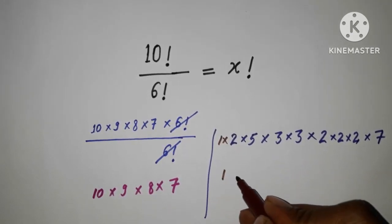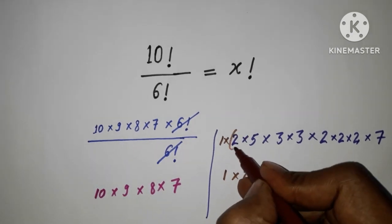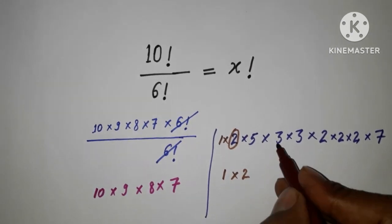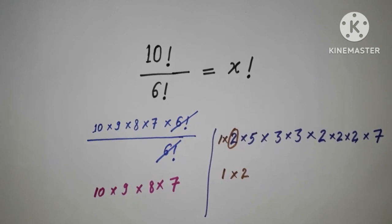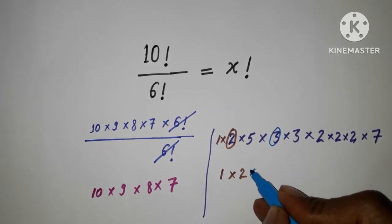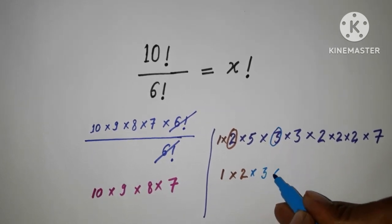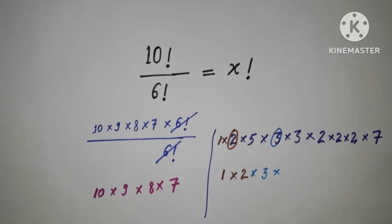So here 1 multiply, this 2 I am just using over here, 2. And then I am using 3 here, so this 3 I am using, multiply 3. And then I am using 4, so this 4 I can get from here, so this one is 4.